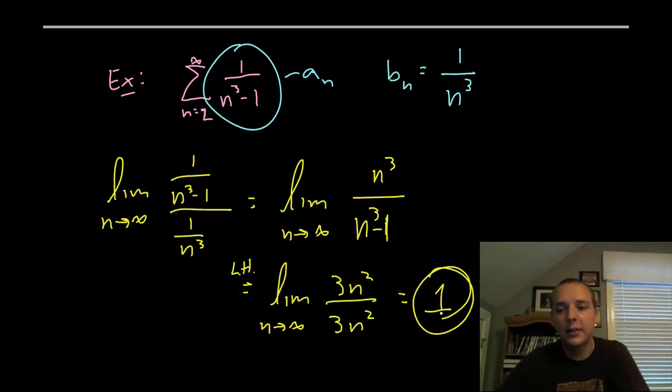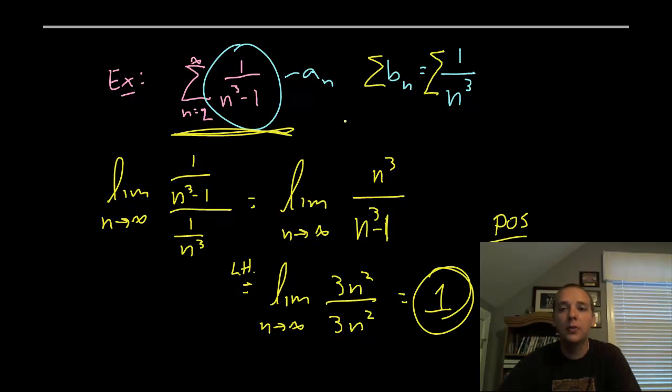I could care less that the limit is one. The one is irrelevant. The one doesn't really matter. The fact is that it's finite. That's the important thing. And since this is a positive finite number, that means that this series and the sum of these b sub n terms either both converge or they both diverge. Now I know they both converge.